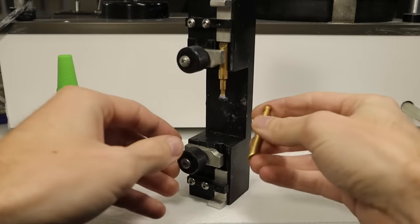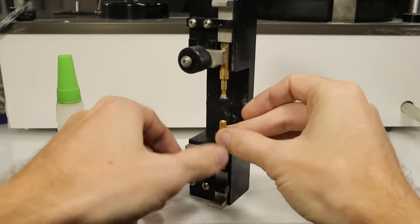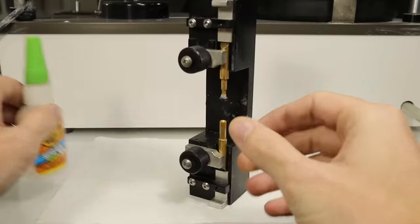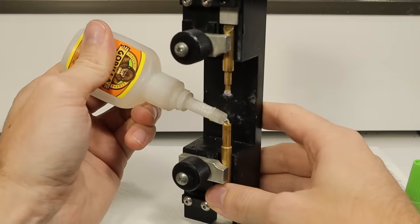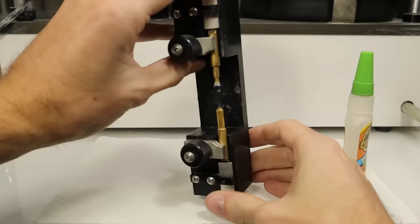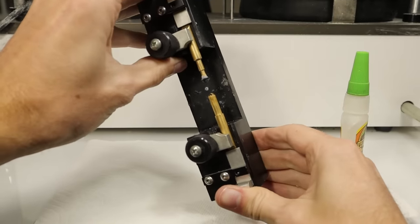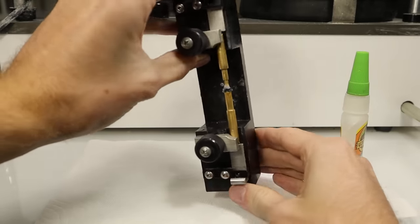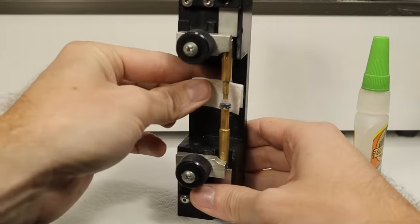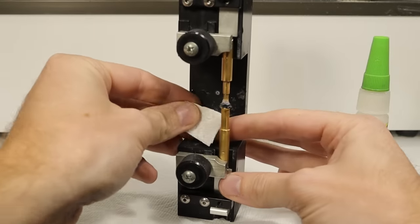The transfer jig is used to attach a cone dop to the pavilion of the stone so that I can later cut the crown side of the stone. I like to wipe off any glue that gets on the girdle.